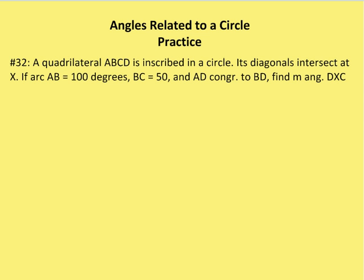First problem, number 32 from the book: a quadrilateral ABCD is inscribed in a circle. Its diagonals intersect at X. If arc AB is equal to 100 degrees, BC is equal to 50, and AD is congruent to BD, find the measure of angle DXC. Part of what you need to accomplish with this particular problem is to draw the figure, because it's not given to you.